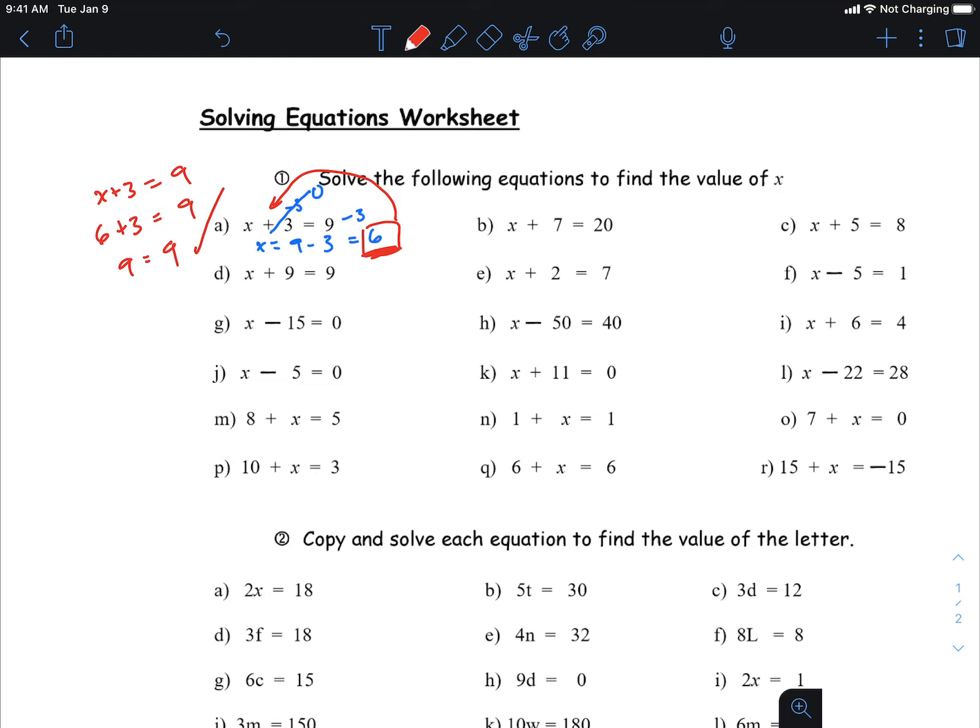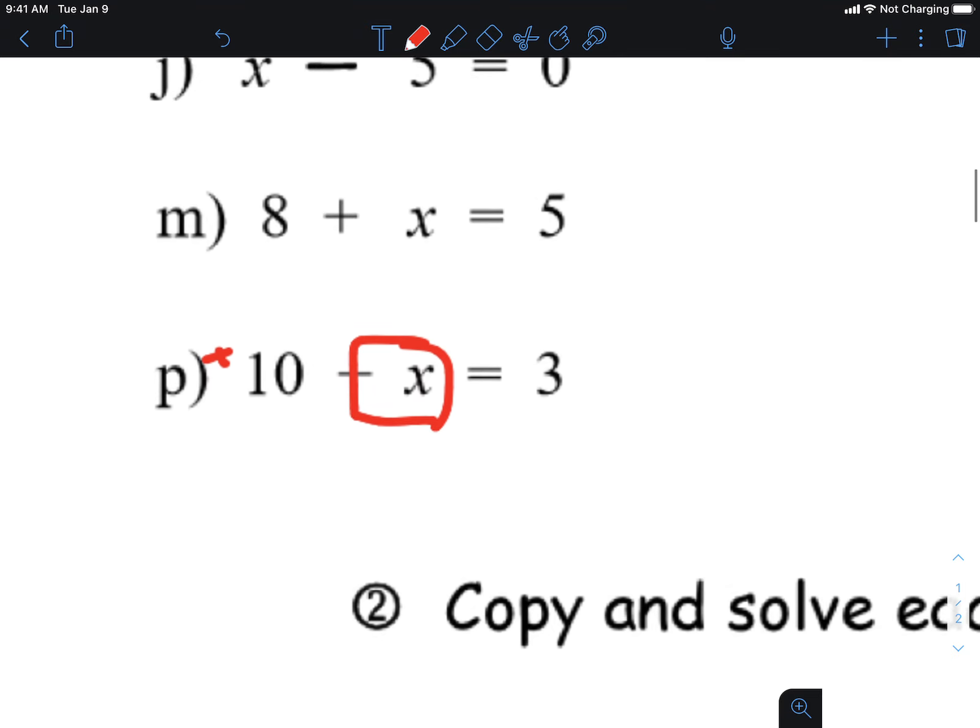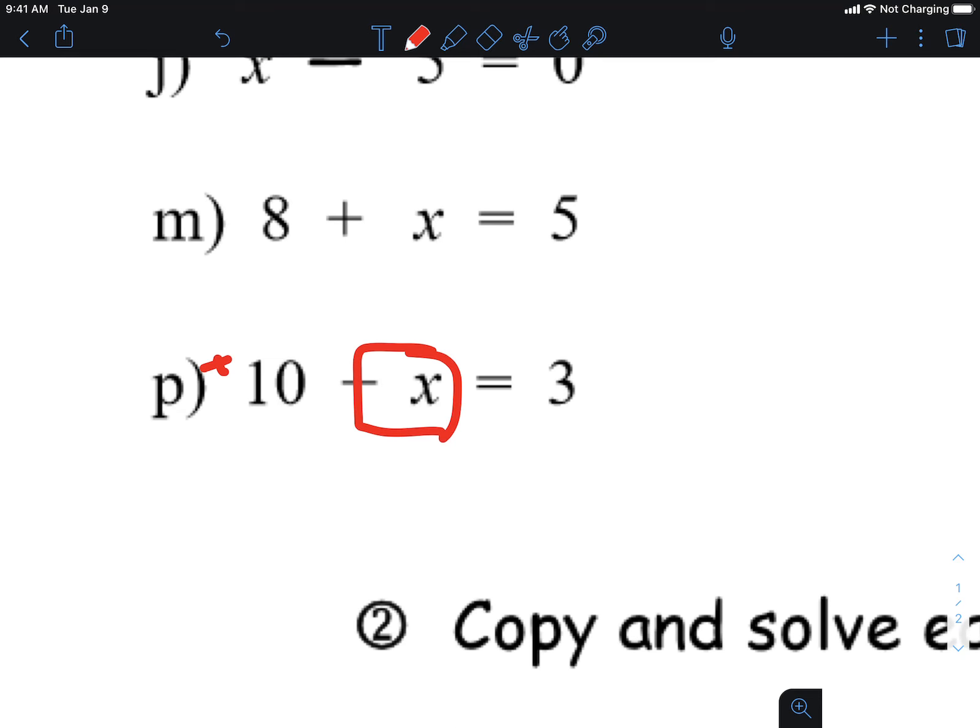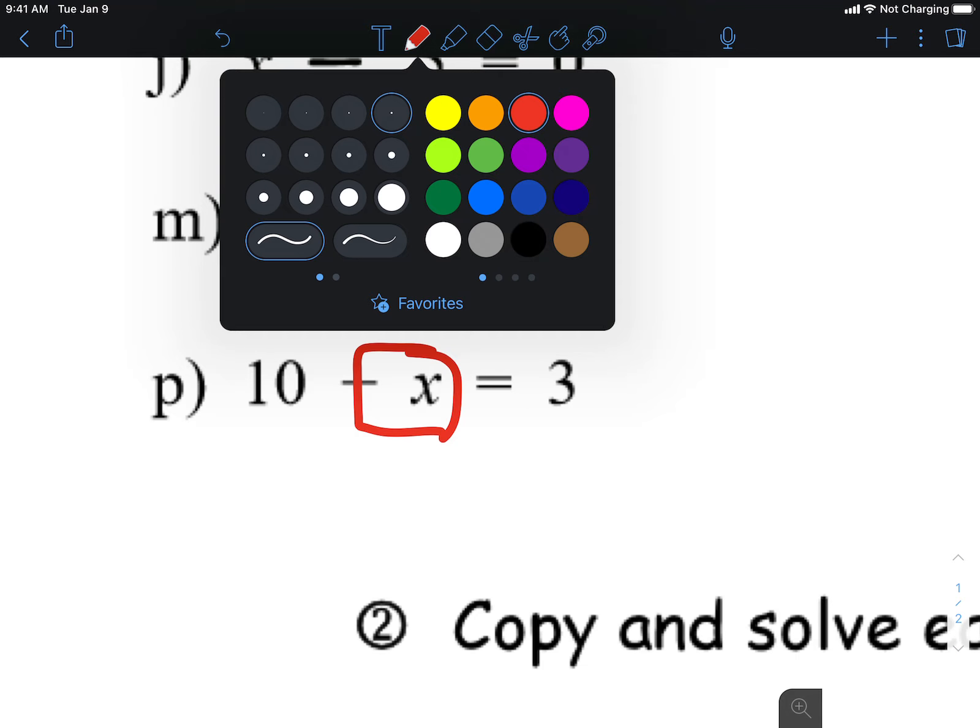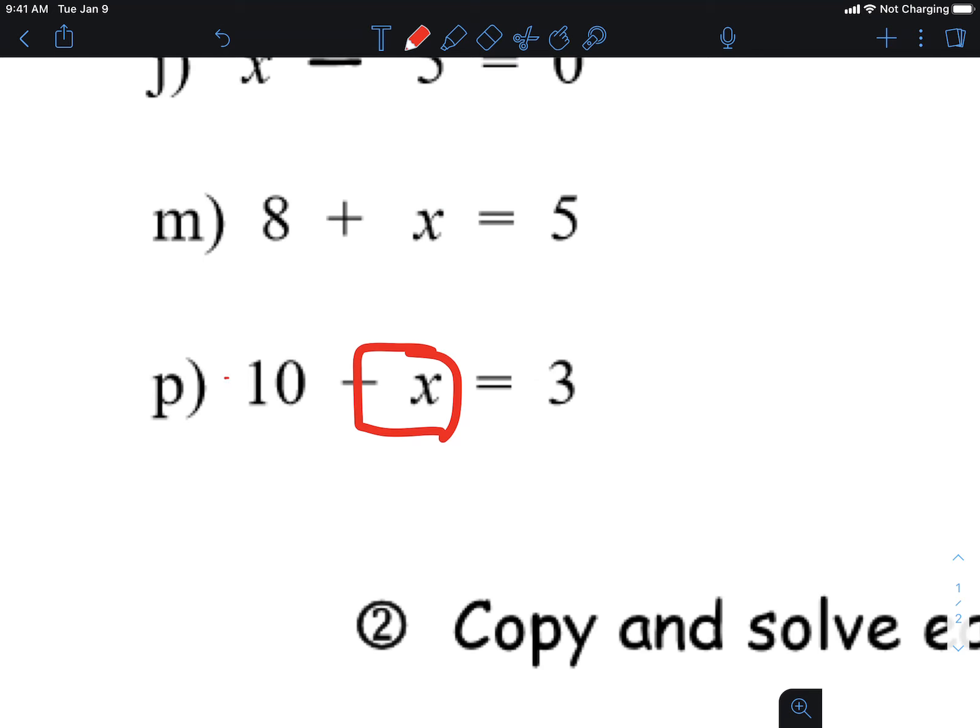Okay, what sign? Remember what I want - I want x by itself. How do I get x by itself? I have a little plus here, don't I, on the 10? The 10 is a positive, does everybody agree? I don't see a negative. So I'm assuming it's a positive, so what do I have to do? I got to do the opposite, right?